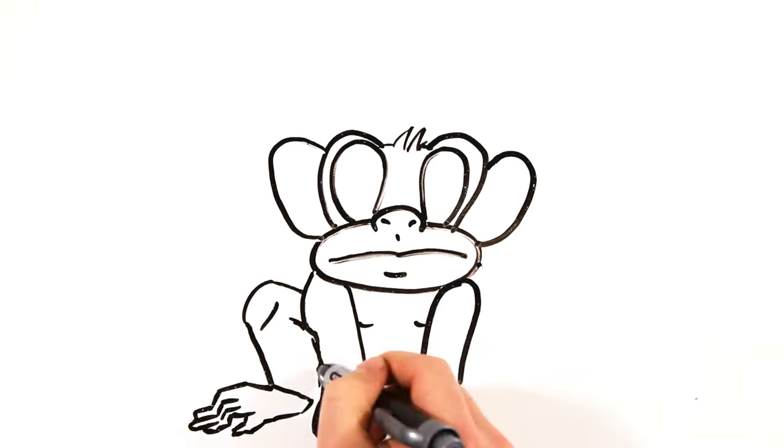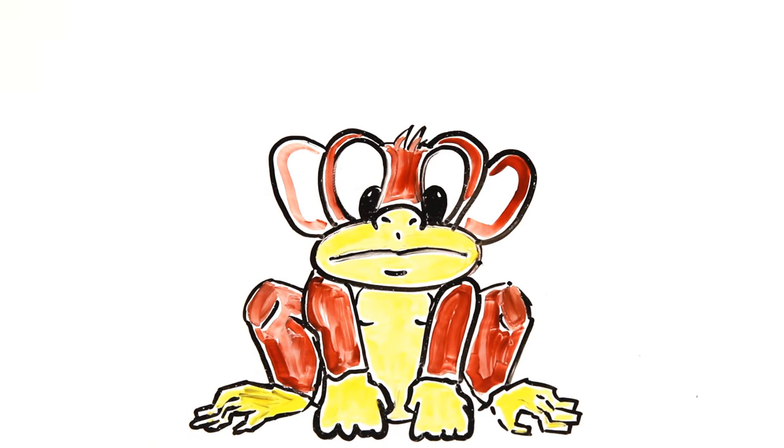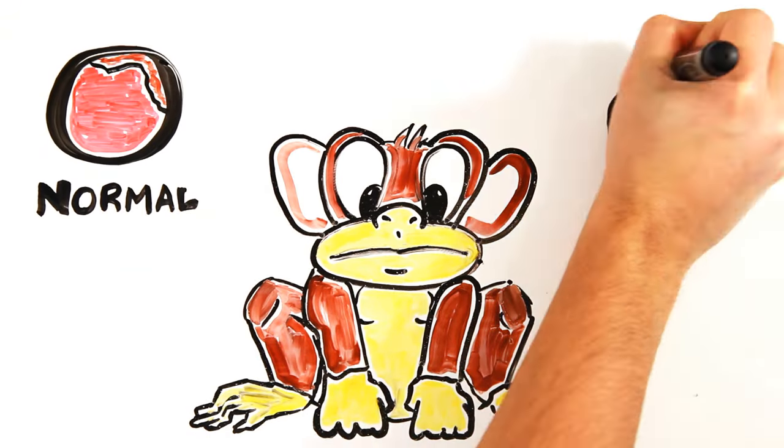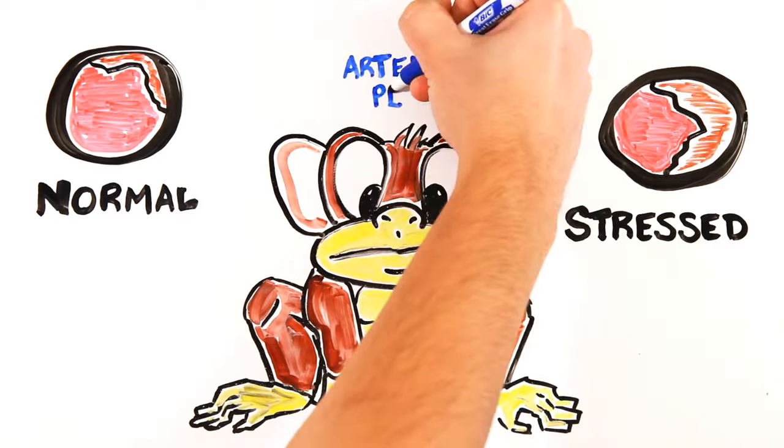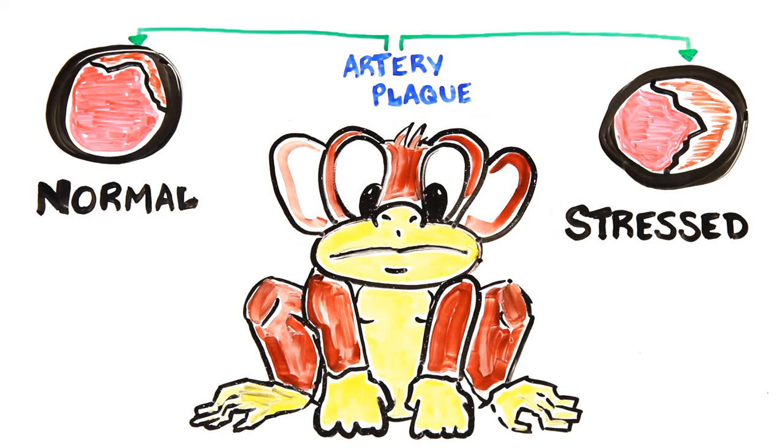When looking at the arteries of macaque monkeys, those under significant stress have more clogged arteries. This prevents blood from getting to the heart quickly during stress and can ultimately lead to heart attacks.